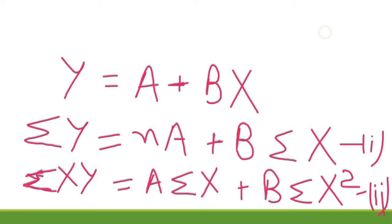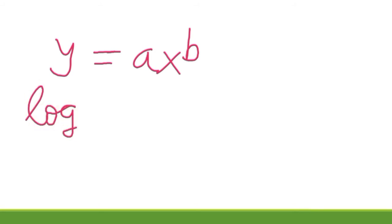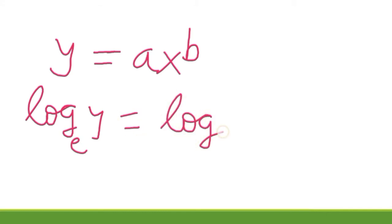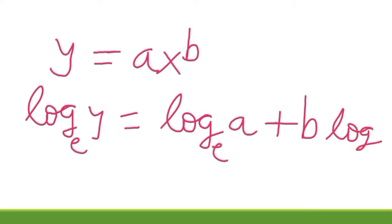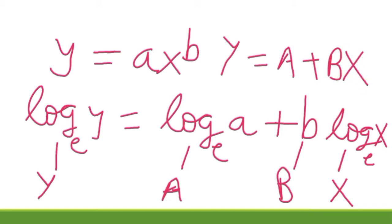For the second type, y = ax^b, we again take logarithm on both sides. It gives: log y (base e) = log a (base e) + b·log x (base e). We put capital Y = log y, capital A = log a, capital B = b, and capital X = log x, so we again get Y = A + BX. The normal equations will be the same as before.